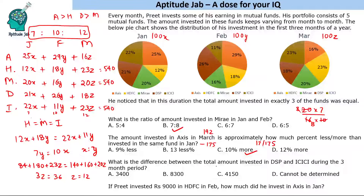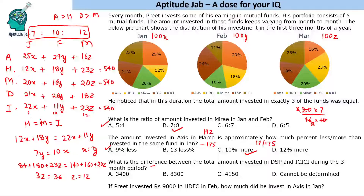What is the difference between the total amount invested in DSP and ICICI during the three-month period? We know the ratios of investments but not the actual amounts invested. Remember: when you know only ratios and percentages, you can answer ratio-based or percentage-based questions, but not value-based questions unless a specific value is given. So the answer here is: cannot be determined.